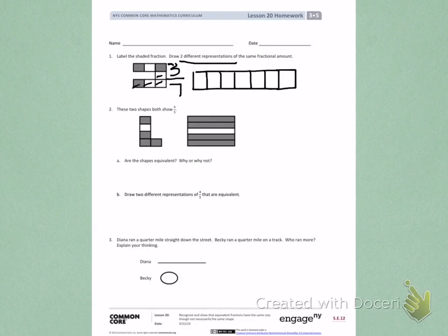Then I can shade three of those parts to show 3 sevenths. On your own, draw another picture.